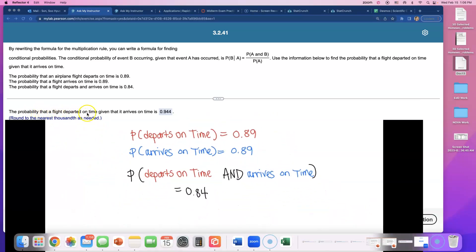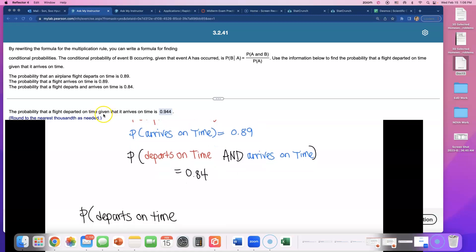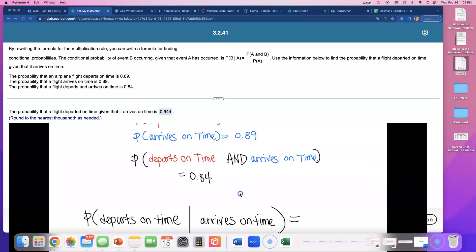Okay, so they're asking for probability that flight departed on time, departs on time. Look at this word here: given. Given, draw that vertical bar. It's a conditional probability now. Given that it arrives on time, so arrives on time. And that is equal to—that's what they want us to find.